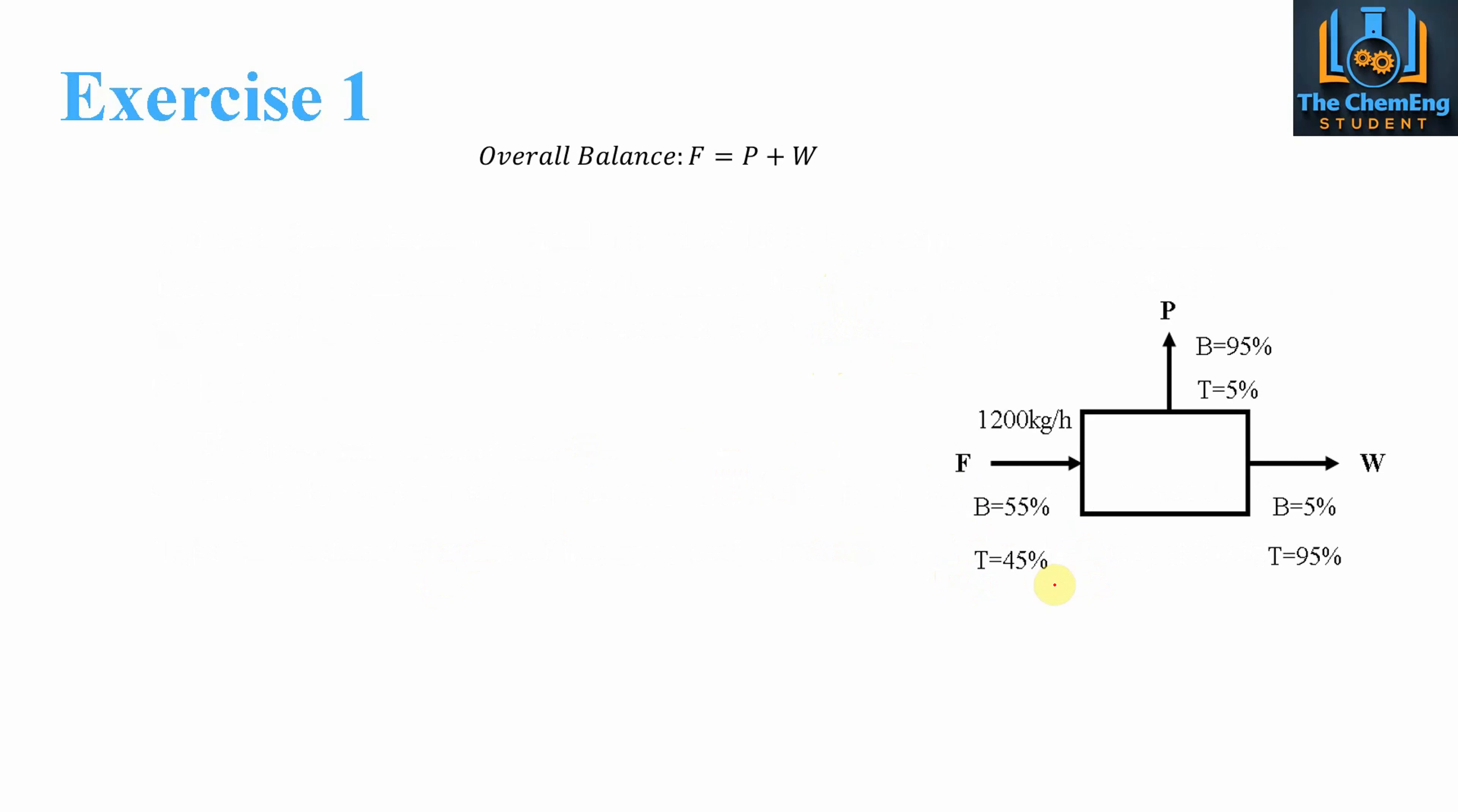So the first thing that we'll do is we will express the information that we were given on a block diagram. So we have our feed coming in with a flow rate of 1200, and we know the composition of the feed. Now B denotes benzene and T denotes toluene. So we know that at the top product, we have 95% benzene, 5% toluene. And then at the bottom product, we have 5% benzene and 95% toluene. Now the overall balance must be what comes into the system is equal to what leaves the system. So the feed is equal to P plus W. So that means that the values of P and W must add up, in terms of flow rate, to the value of F.